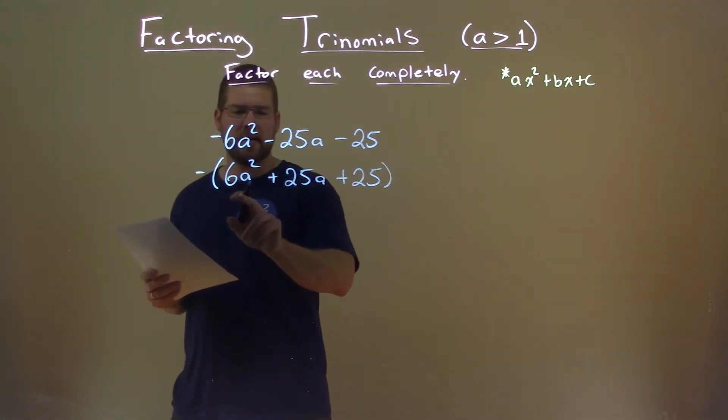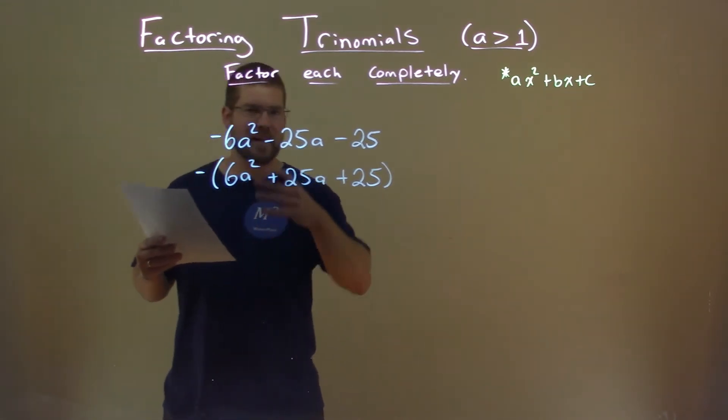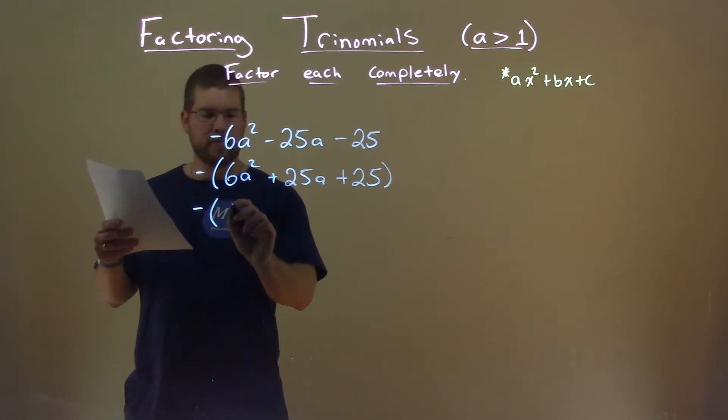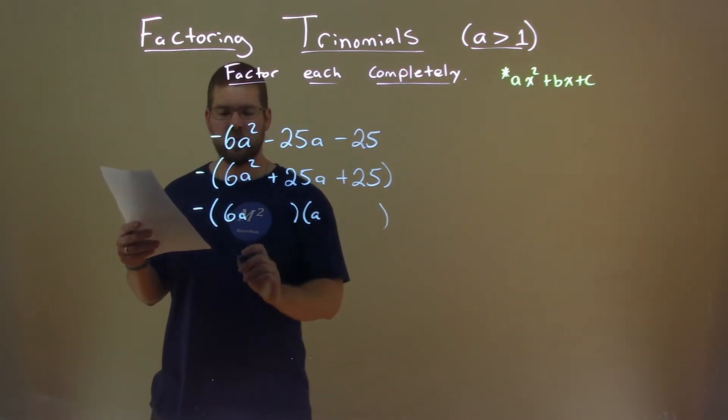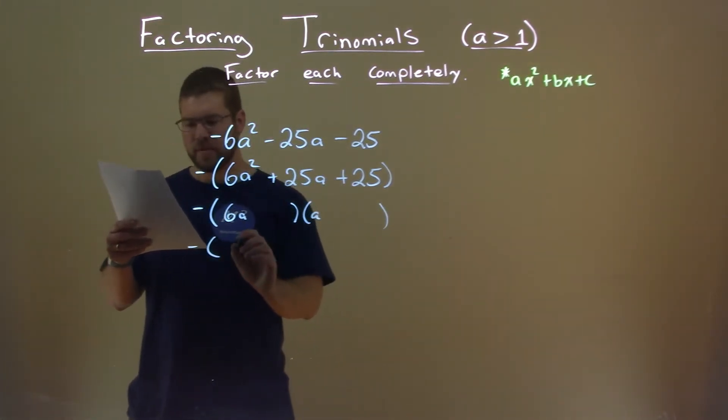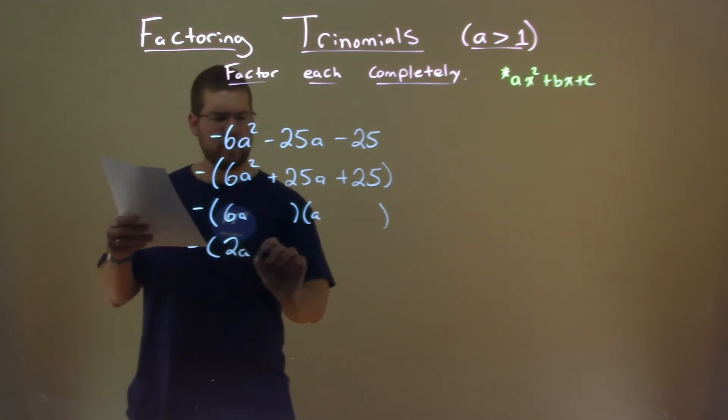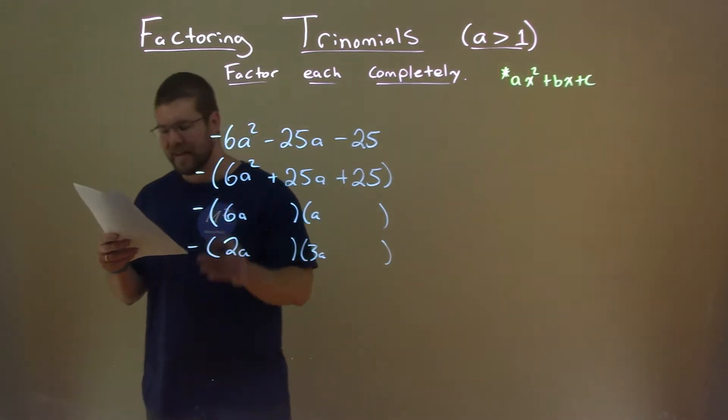So now we're looking at 6a squared, and that leaves us with two options on how we can set up this factoring. We can either have 6a times a, because 6a times a gives us 6a squared, or we have the option of 2a times 3a. 2a times 3a is 6a squared.